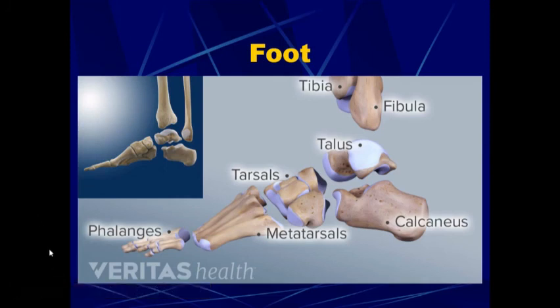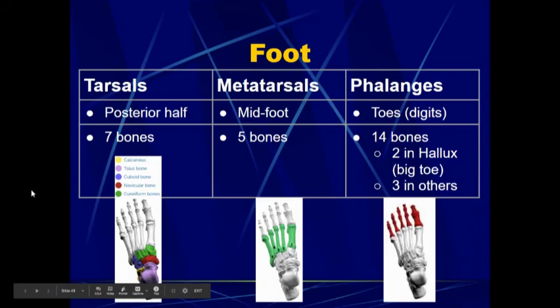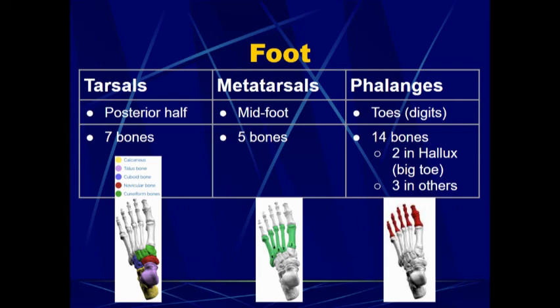The makeup of the foot is very similar to the makeup of the hand. We have tarsals, which are the ankle bones or technically the posterior half of the foot — there are only seven tarsals. The metatarsals make up the midfoot and there are five. Then the phalanges make up your toes or digits. Each toe has three phalanges except for your hallux or big toe, which only has two — similar to your thumb of the hand.